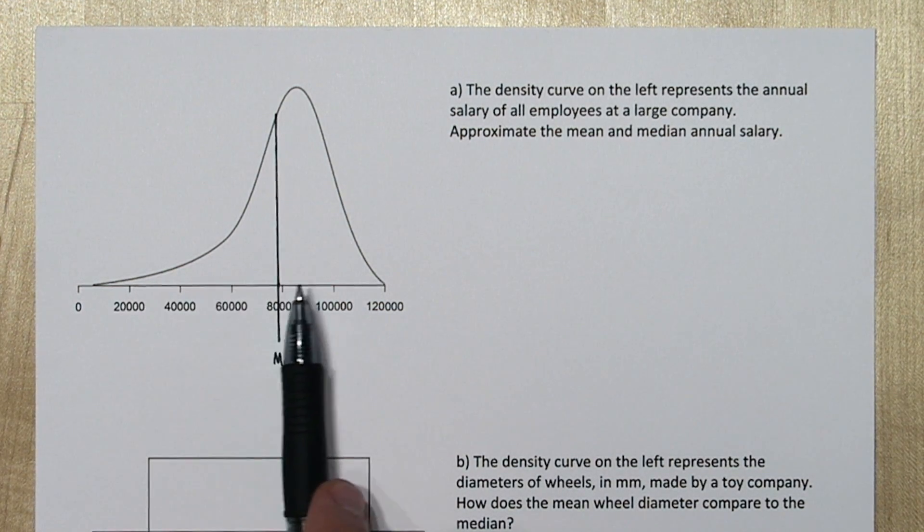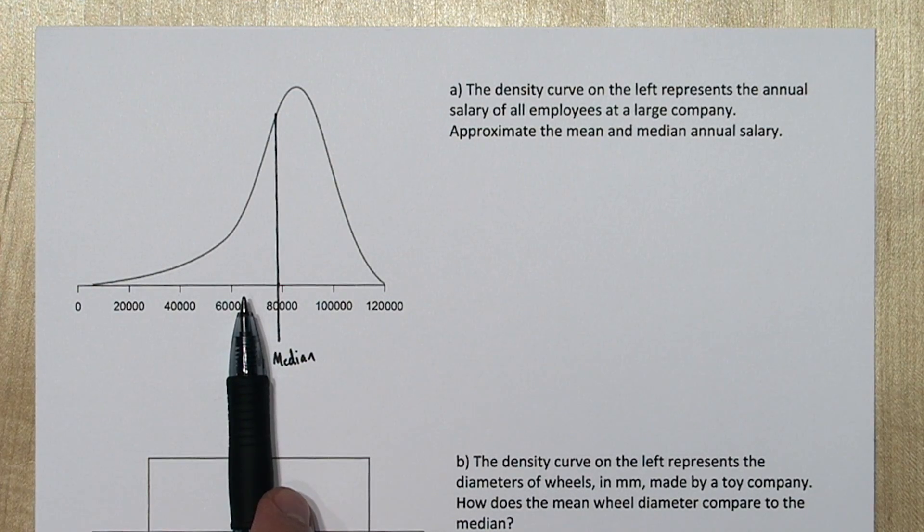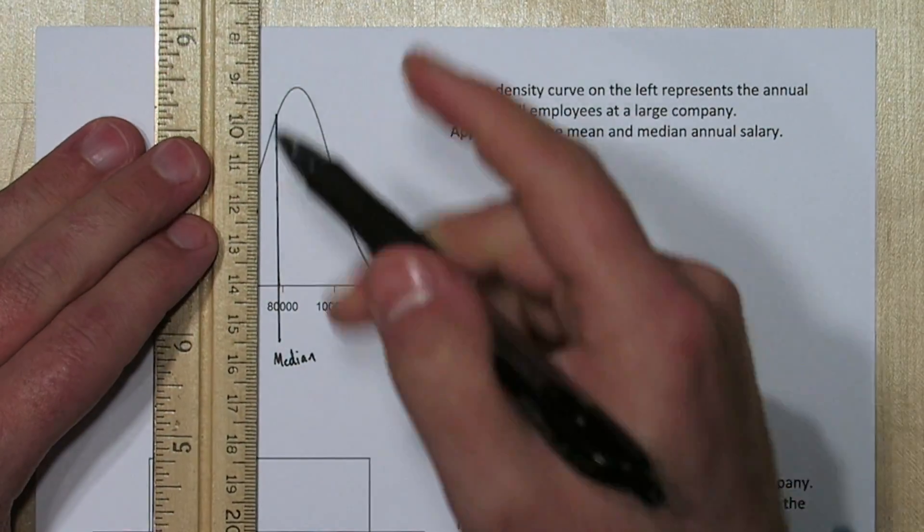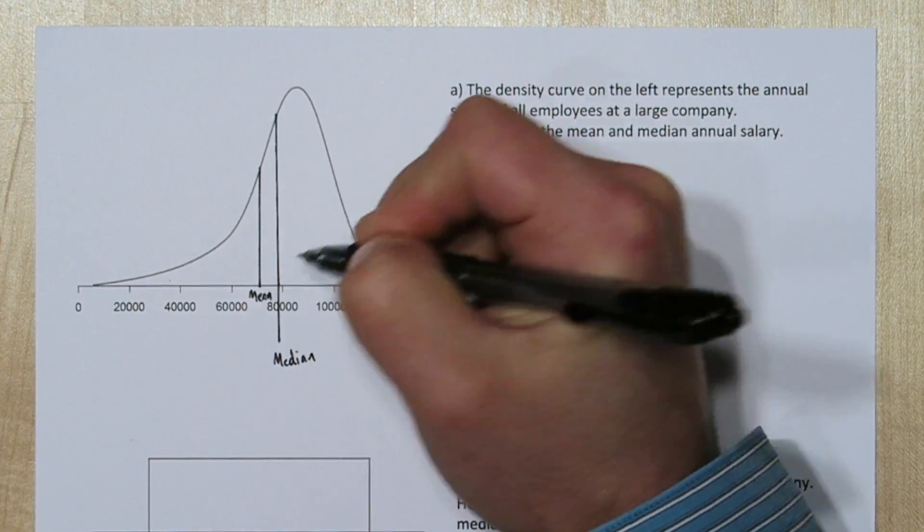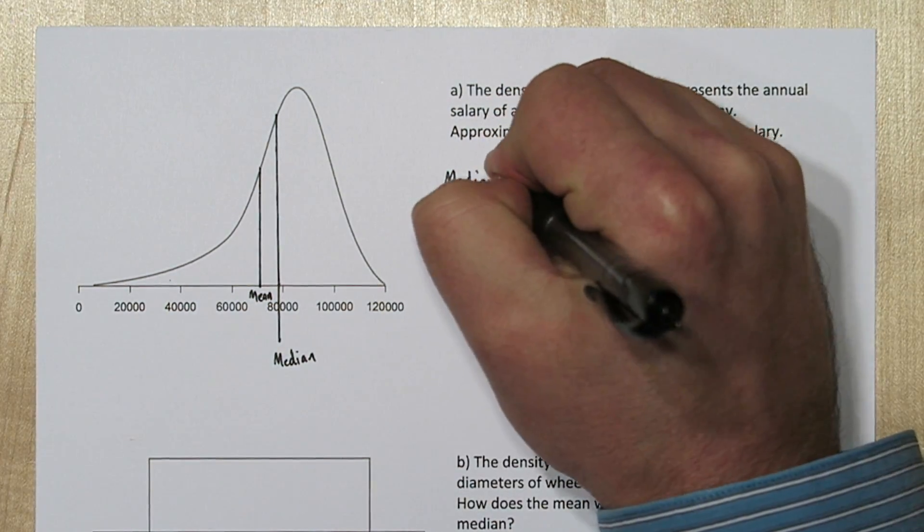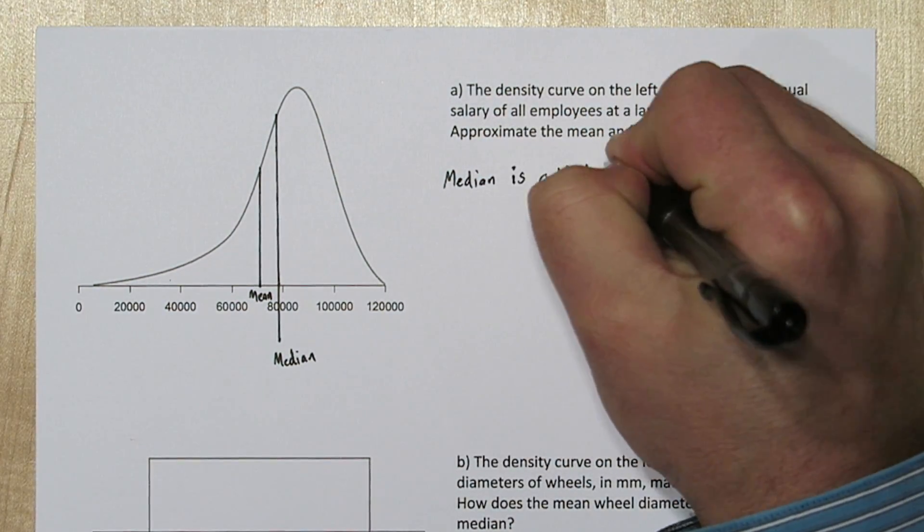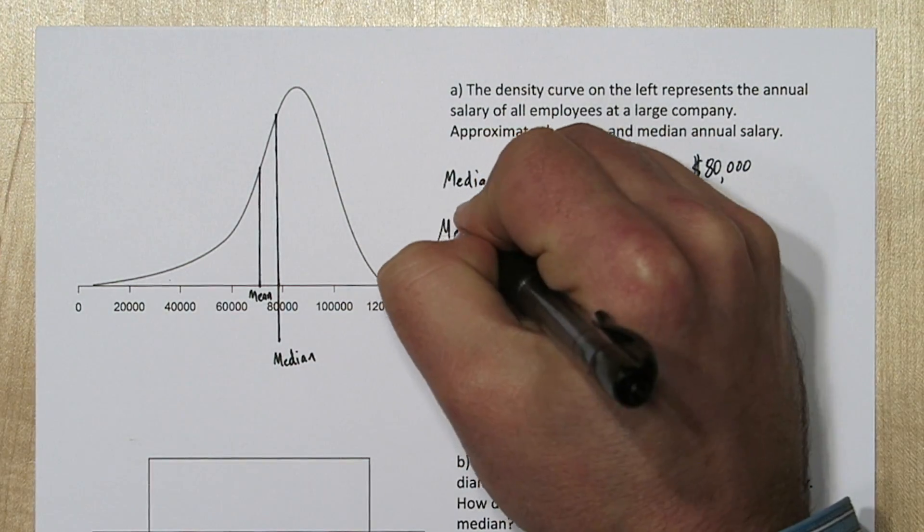Since it's skewed to the left, I know the mean is actually going to be pulled to the left to get this shape to balance. I think it's about here. So we'll say the median is a little less than $80,000 and the mean is around $70,000.